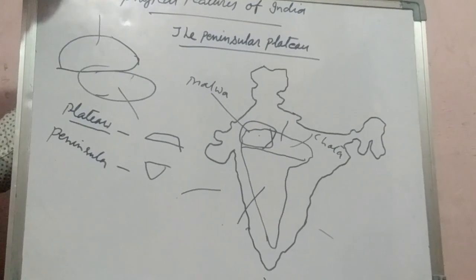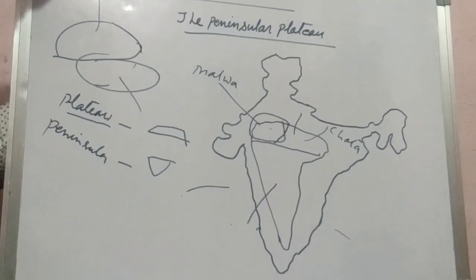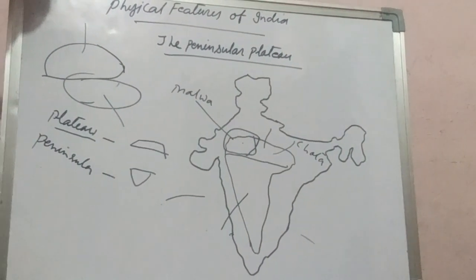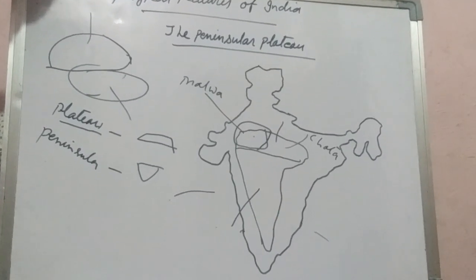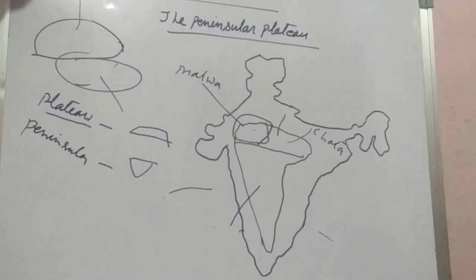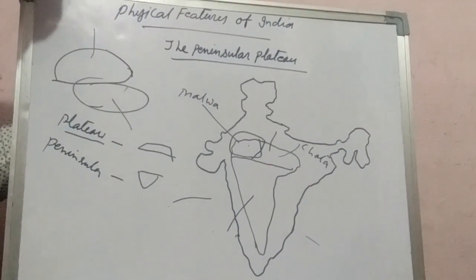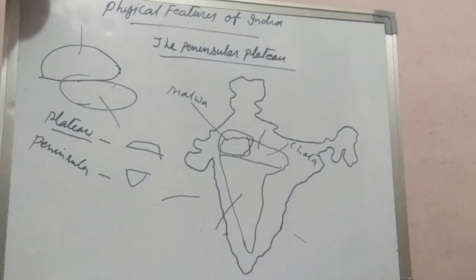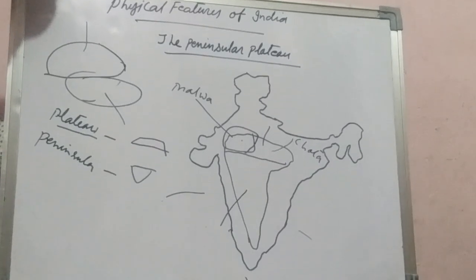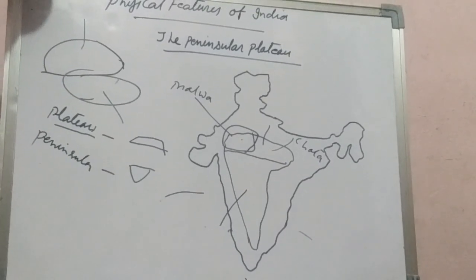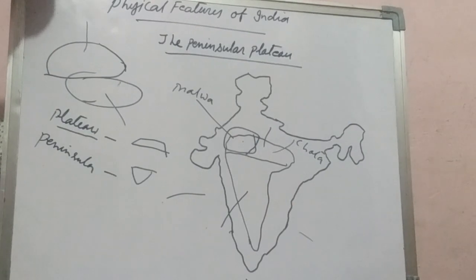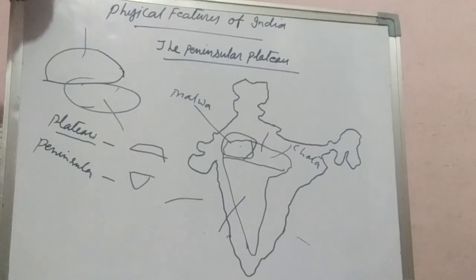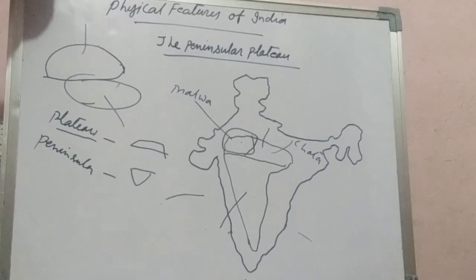It was formed due to the breaking and drifting of the Gondwana land, thus making it part of the oldest landmass. The Plateau has broad and shallow valleys and rounded hills. This Plateau consists of two broad divisions: one is called the Central Highland, and the second is called the Deccan Plateau. The Central Highland is divided into two parts — Malwa Plateau and the Chhota Nagpur Plateau.